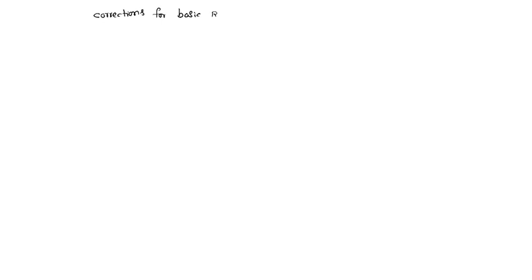Corrections for basic runway length. There are three corrections here. The first one is elevation correction. Basic runway length is based on mean sea level. If the airport is above mean sea level, then a correction is required for basic runway length.